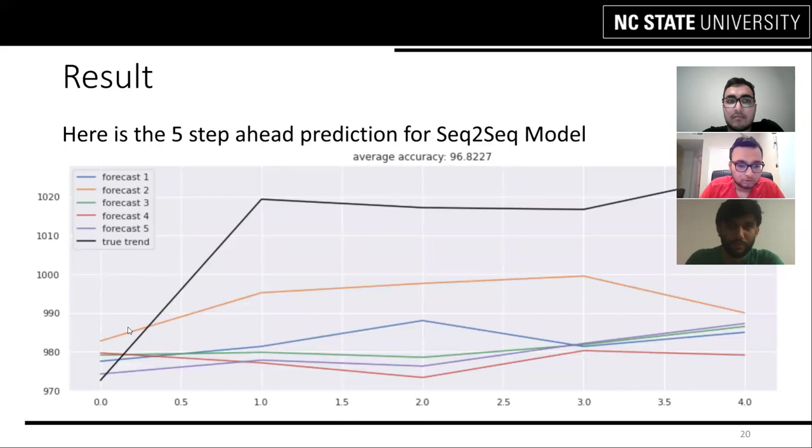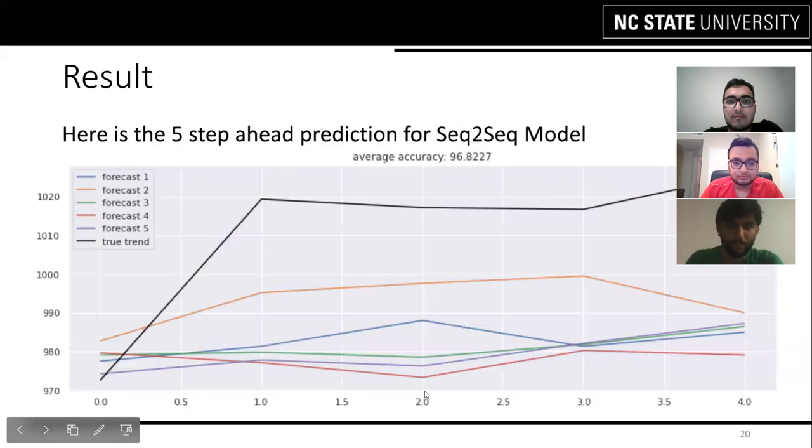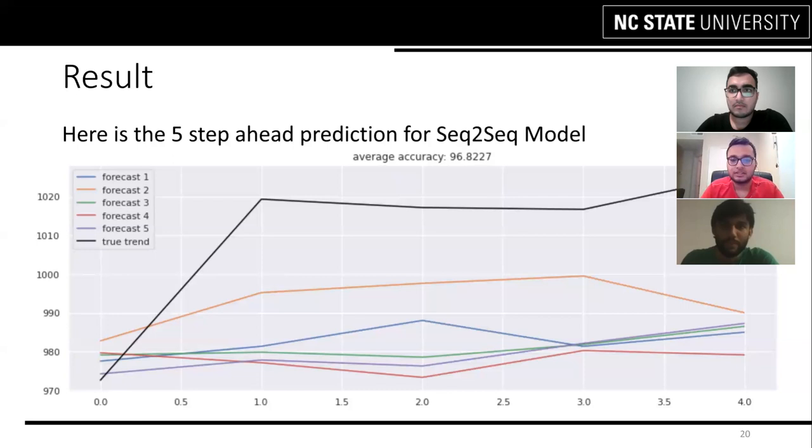Here again, the black line is the ground truth. The x-axis is the day and the y-axis is the price and same thing in this graph also. As you can see the sequence to sequence model clearly increased the accuracy of the forecasting model compared to the vanilla LSTM and that is from our side. Thank you.